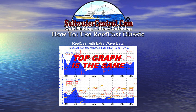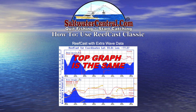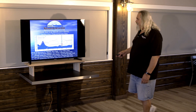ReefCast with extra wave data. When you see all this extra stuff in the area you're wanting to go fish the next day, know that there's going to be more than one sea and it's probably going to be sloppy. There are times you won't see any of this over the entire week, and there are times when it's just jumbled up coming from every which way. Know that any time you see extra wave data, it's going to be sloppy that day. The blue area shows the primary wave height and wave period. The orange circles show your primary wave direction. The thin red line is the secondary wave period, and the yellow line is the secondary wave direction.